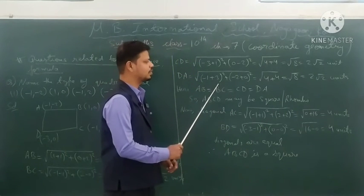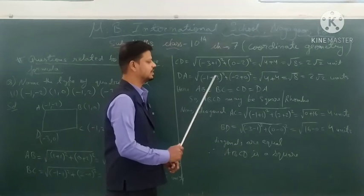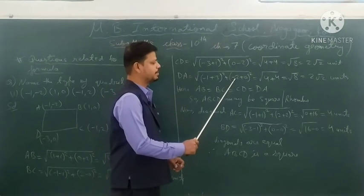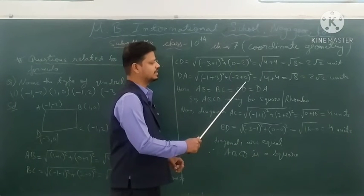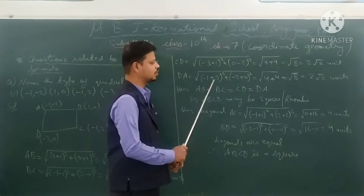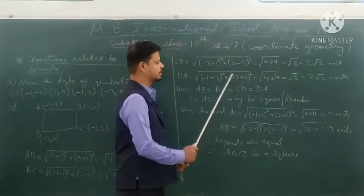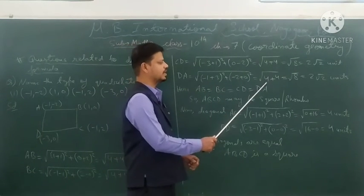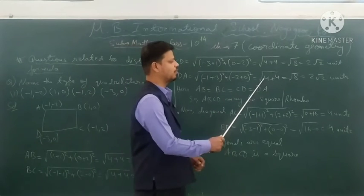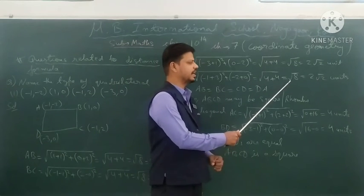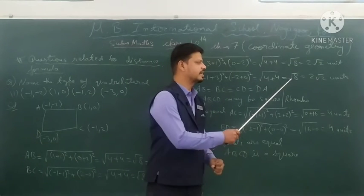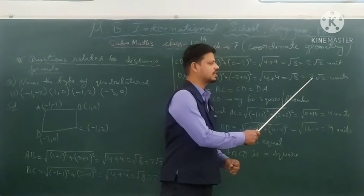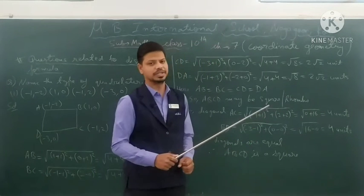Now we calculate DA using the distance formula: √[(−1−(−3))² + (−2−0)²] = √[(2)² + (−2)²] = √[4 + 4] = √8 = 2√2 units.